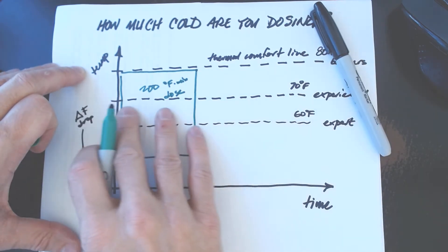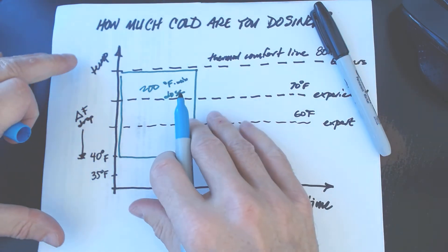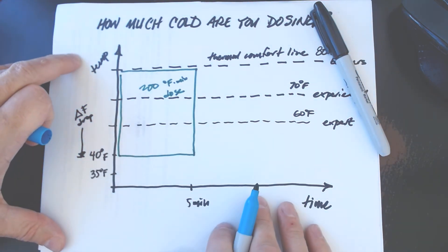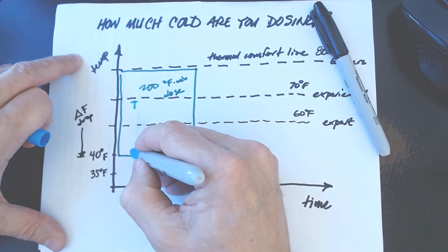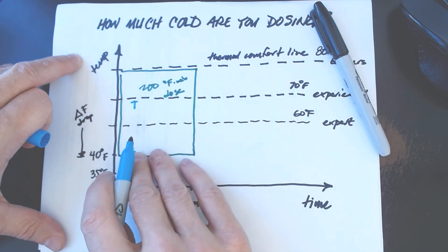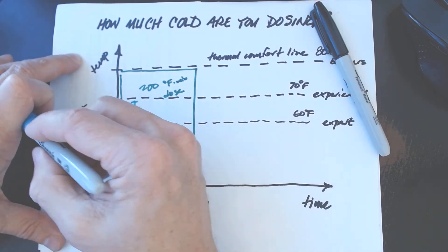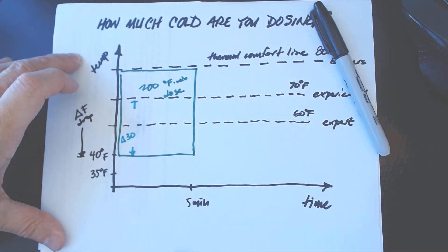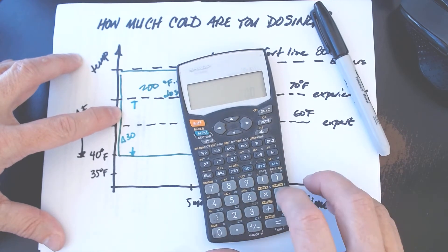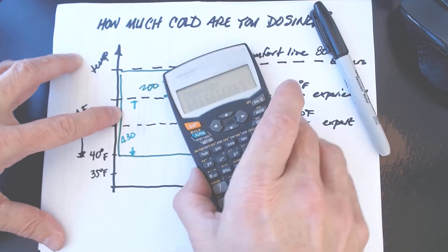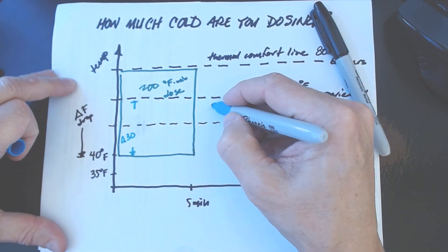But for someone who's more experienced with a thermal comfort line of 70, how long would they have to stay in to get the same dose of cold? Well their drop from their thermal comfort line of 70 down to their forge of 40, that's only a delta of 30. So if you want to get 200 degrees Fahrenheit minutes with a delta of 30, you take 200 divided by 30 and you come up with six and two-thirds. So they're out here.